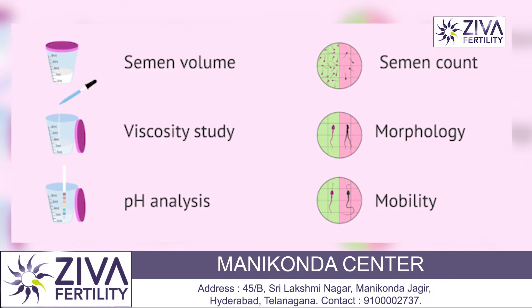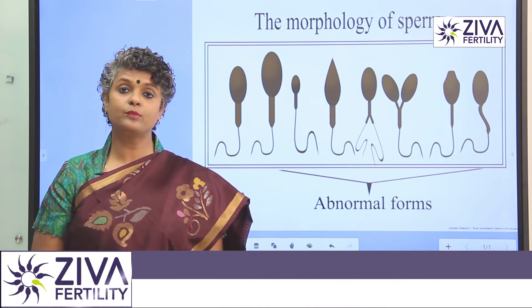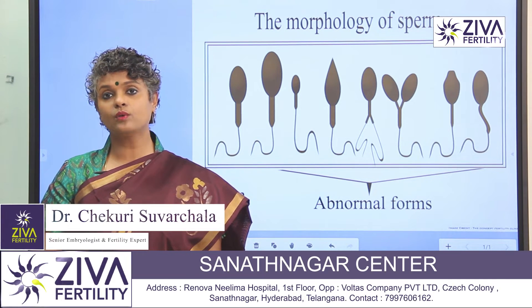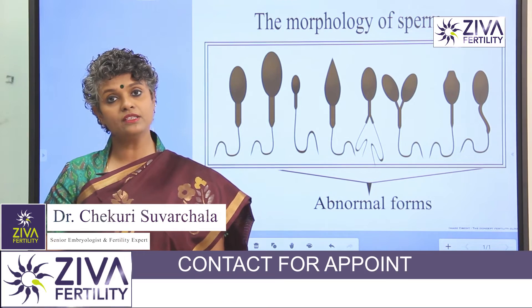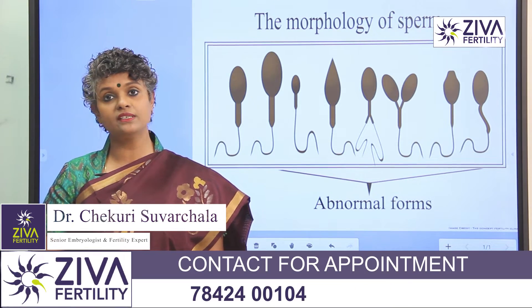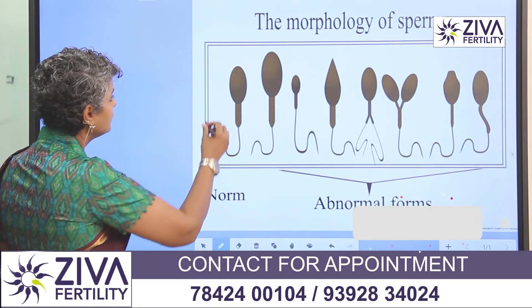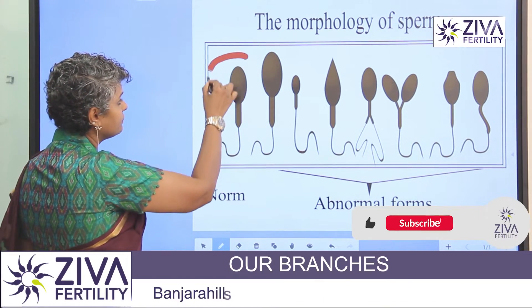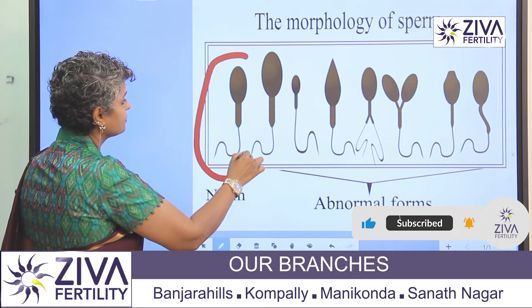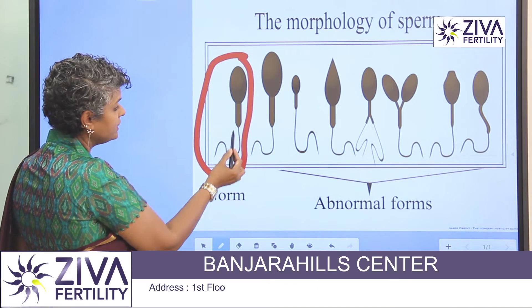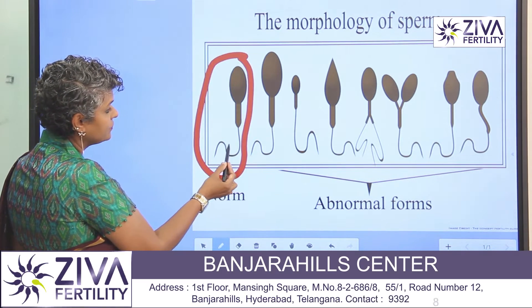Today's video is about normal and abnormal morphology that we encounter when we are looking at sperm morphology in a sample. A normal sperm looks approximately like this. It has a head, a midpiece, and a tail.